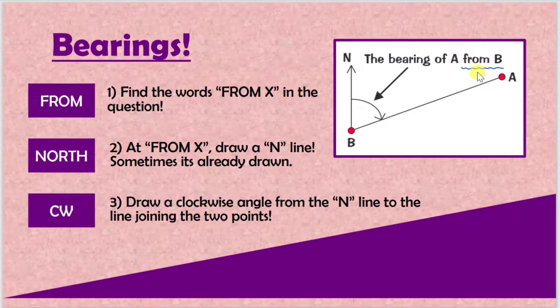Always highlight FROM, like 'from B' - that's where you start. The second step is to look for the word NORTH. It says there at FROM X, in other words from B, draw a north line. Sometimes it's already drawn. You start at point B and you just draw this north line up there, just like they did - from B, draw north line from B.